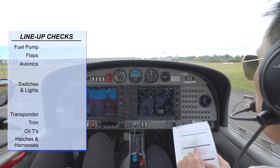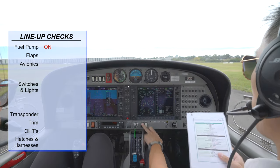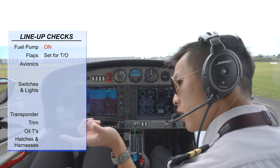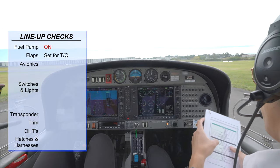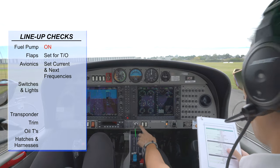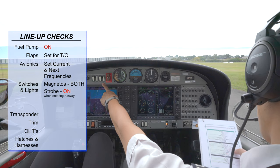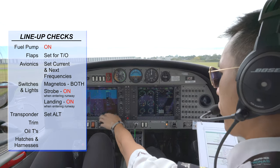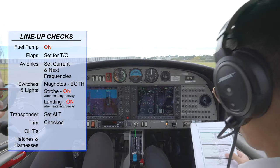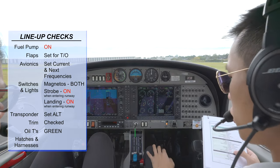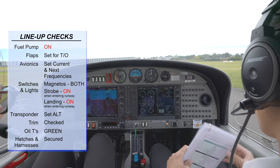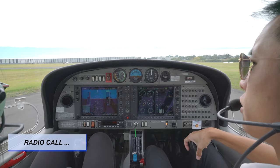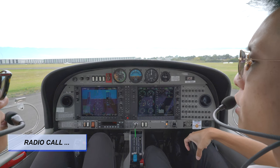Now for the live demonstration. Line-up checks: fuel pump on; flaps set for take-off and indicating flap down; avionics on current frequency; magnetos on both; transponder on when entering runway; landing lights on when clearance received; trim; oil in green; hatches and harnesses secured. Line-up checks complete. Radio call: 'Melbourne Tower, Juliet Whiskey Whiskey, ready runway 31 left, four circuits.'